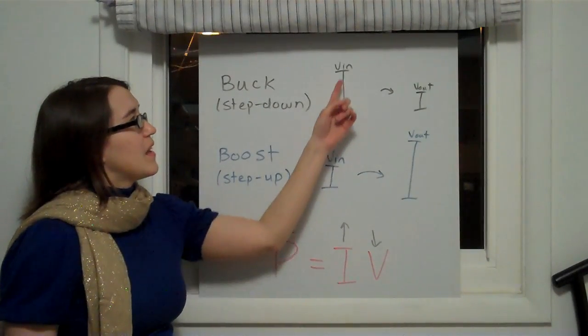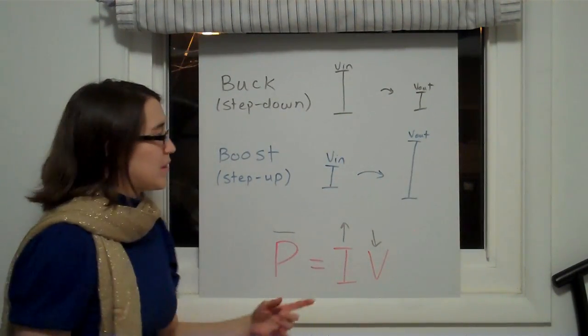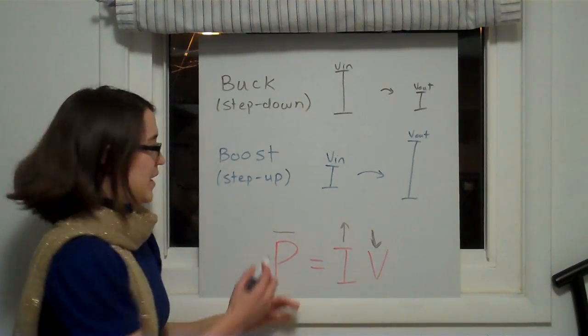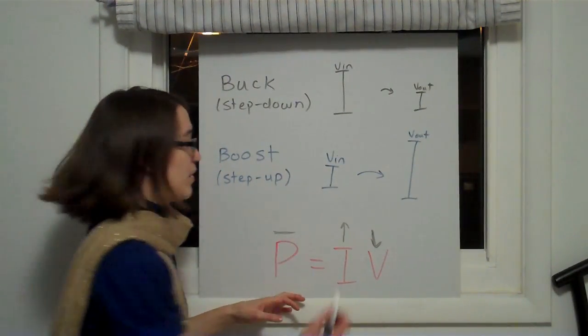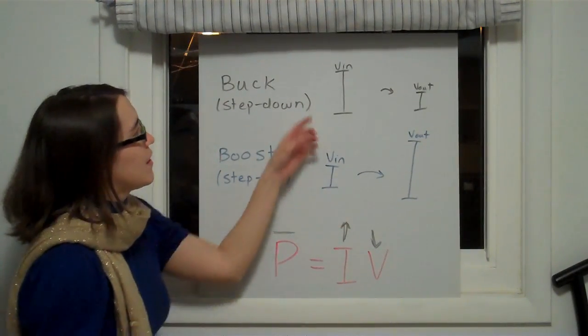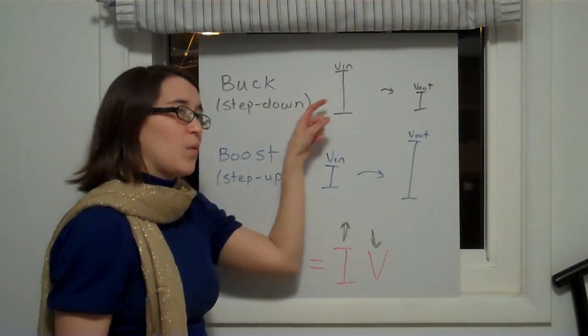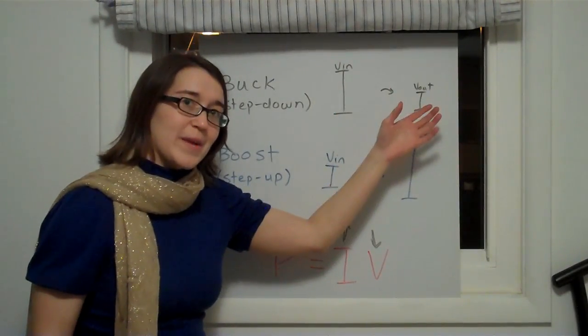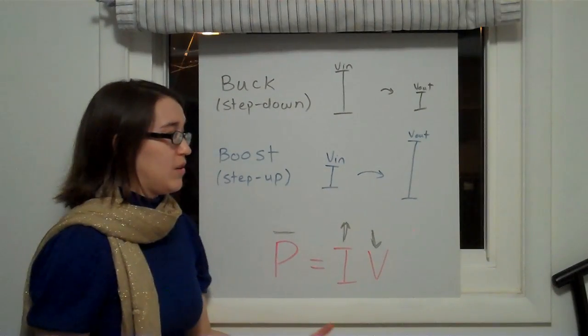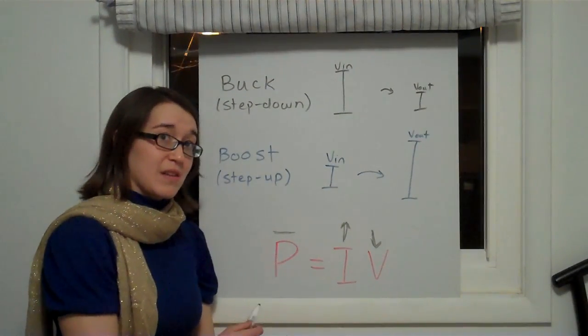When we look at the input to output of the buck, we see that the voltage decreases. And because the power is conserved, we know that the current must increase. So that means the current coming out of the output will actually be higher than the input, which is a little counterintuitive, but remember that power must be conserved.